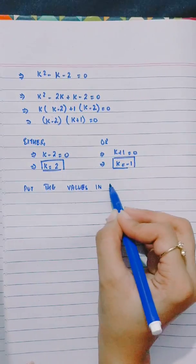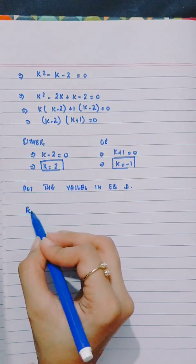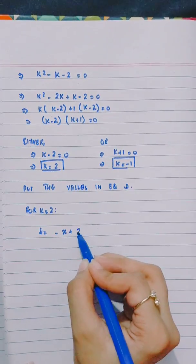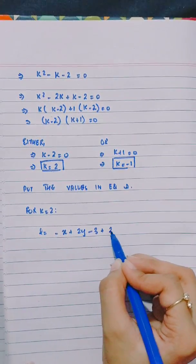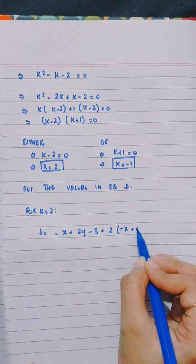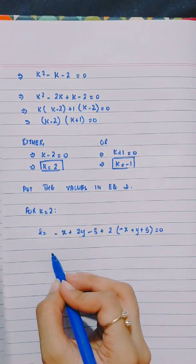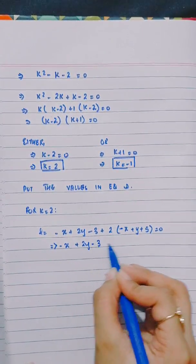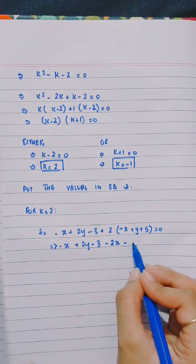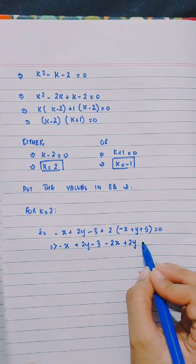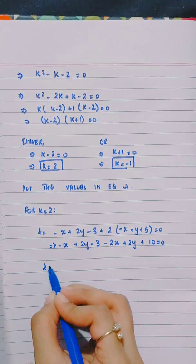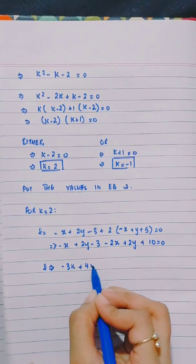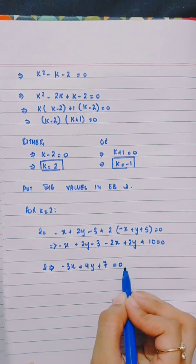Putting the values into equation. For k equals 2: l equals minus x plus 2y minus 3 plus 2 times (minus x plus y plus 5) equals 0, which expands to minus x plus 2y minus 3 minus 2x plus 2y plus 10 equals 0, giving l equals minus 3x plus 4y plus 7 equals 0.